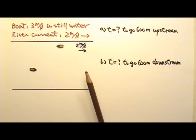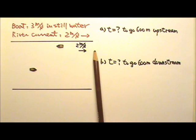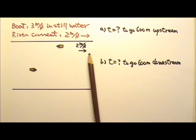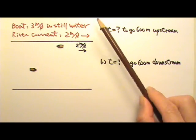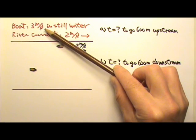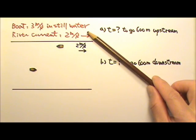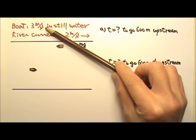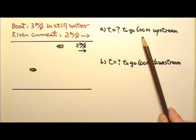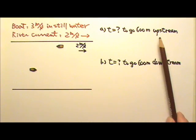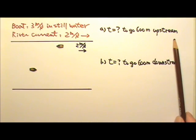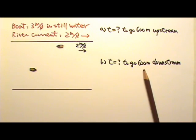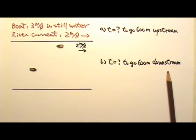Here you have a river with a river current at the speed of 2 m per second flowing to the right, and a boat that can travel at 3 m per second in still water, which means that 3 m per second is the speed of the boat relative to the river water. How long does it take this boat to travel 600 m upstream? How long does it take the same boat to travel 600 m downstream back to its starting point?